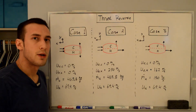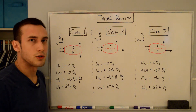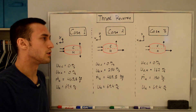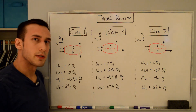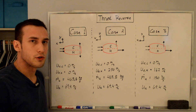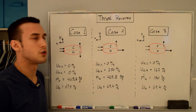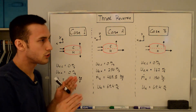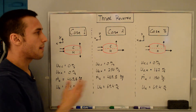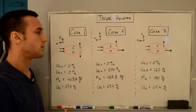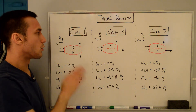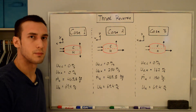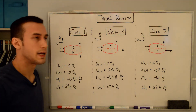I'm going to go through three different cases to show how the thrust changes for each scenario. There are multiple types of thrust reversers out there, but this is a simplified analysis of a two-stream turbofan engine and what happens to the thrust if we divert or deflect one or both of these streams. First let's look at case one.